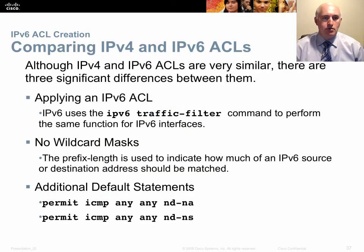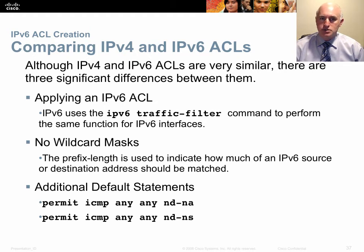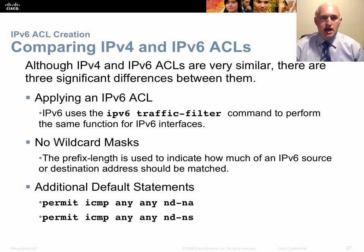The command syntax is a little different — you type 'ipv6 traffic-filter' to apply your IPv6 ACLs. Wildcard masks are also gone. Instead of the inverse of the subnet mask, you now just use the subnet mask with CIDR prefix notation, like /64.